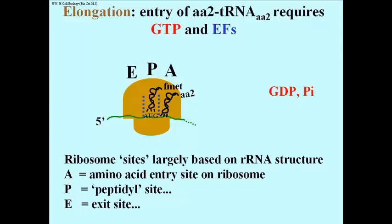If you keep consuming GDP, you have to start regenerating GTP. So another elongation factor is an enzyme that catalyzes the phosphorylation of GDP again, so you keep regenerating GTP. This elongation factor is not an intimate part of translation, but it is a necessary component to make sure there is always enough GTP to support elongation.